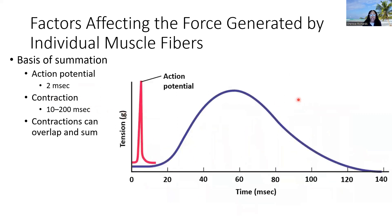Summation works as follows: each action potential lasts about two milliseconds, while the contraction can last anywhere between 10 to 200 milliseconds, so contractions can overlap. If several action potentials are generated within the period it takes one contraction to complete, those additional action potentials can result in more force being generated. This is where Treppe and summation differ — summation does not allow the muscle to fully relax.